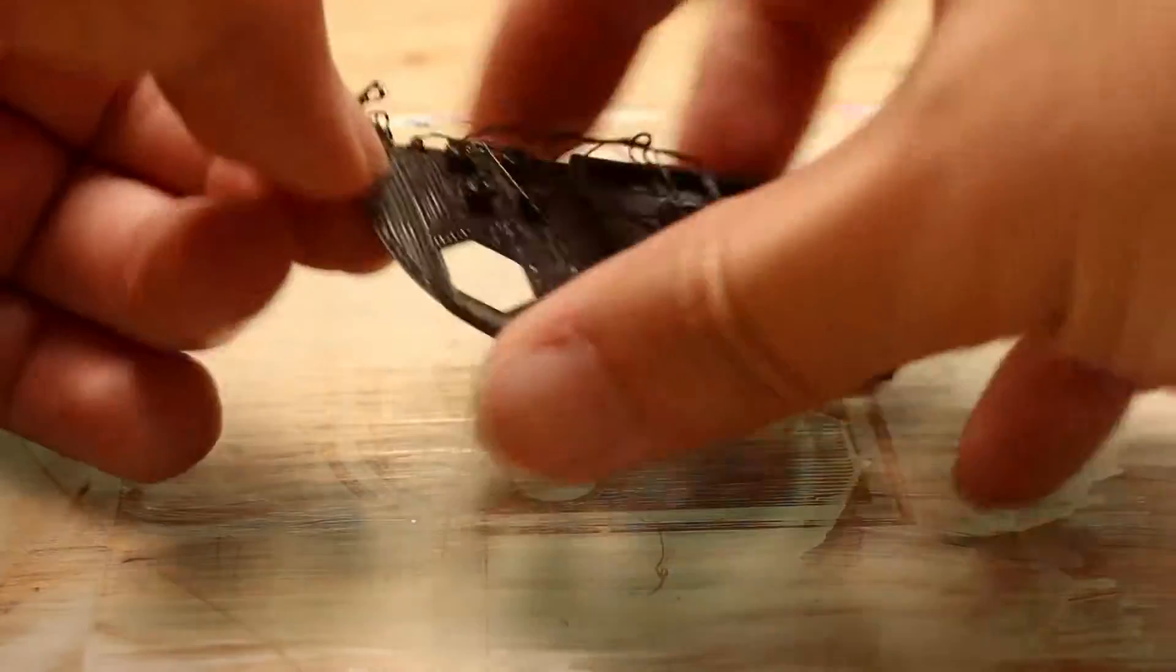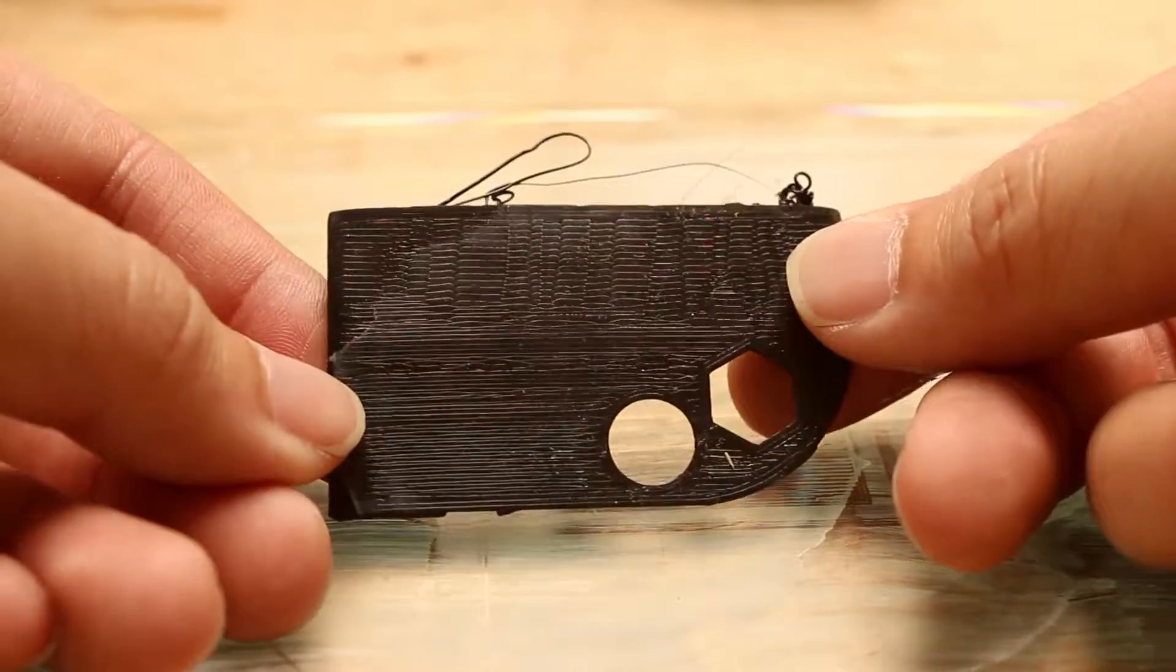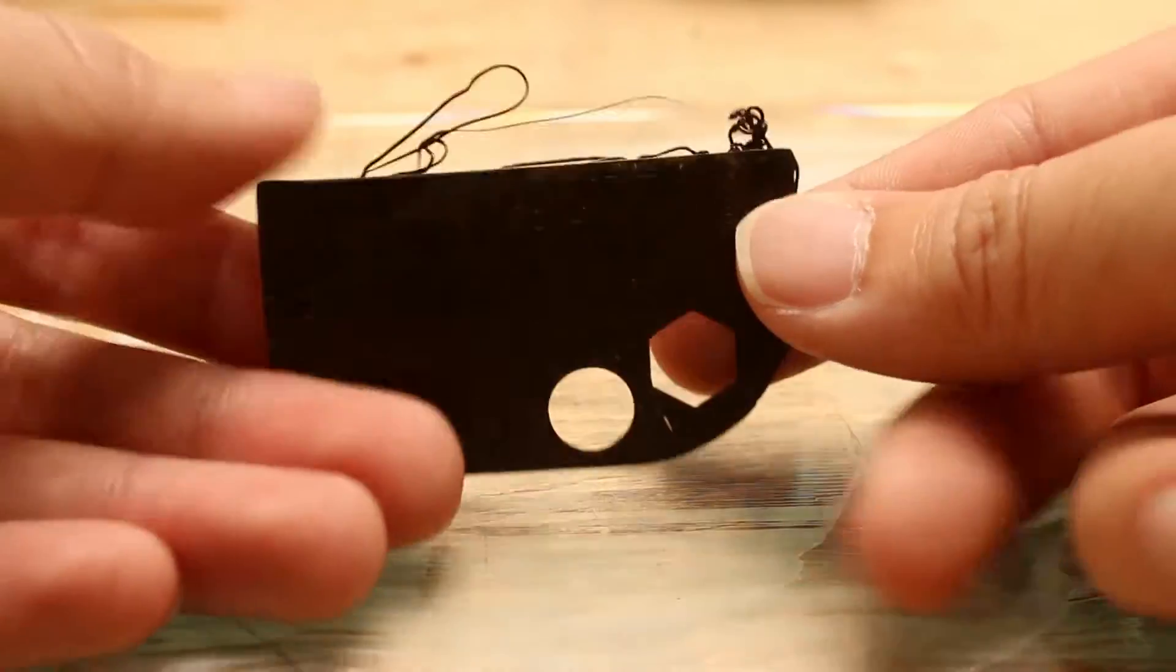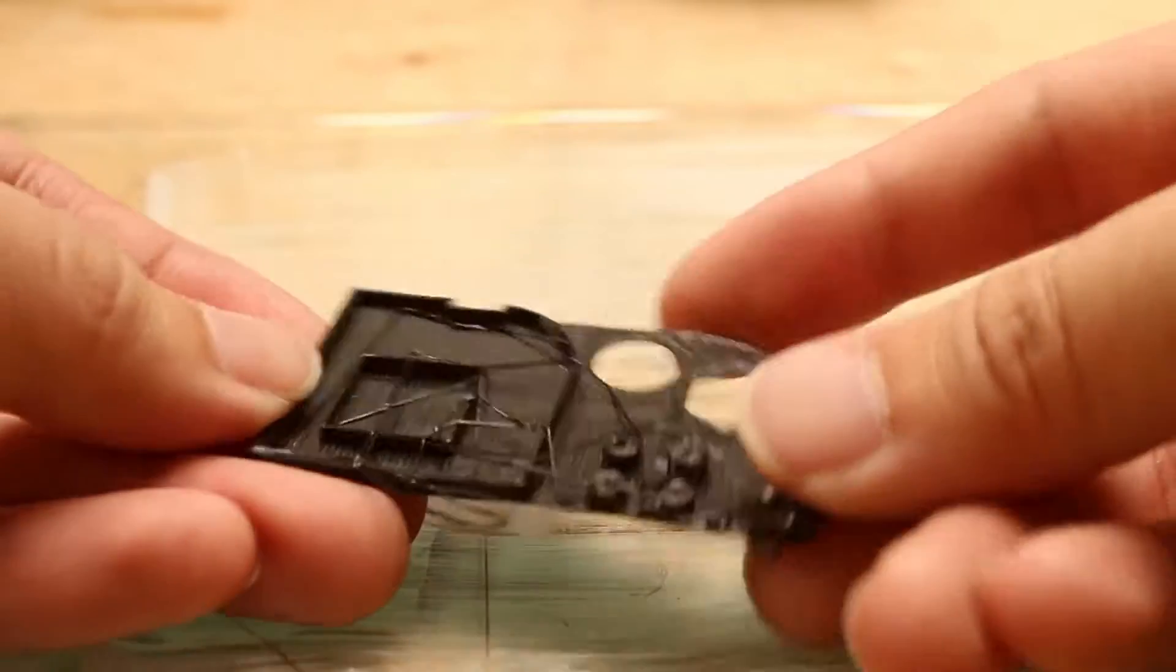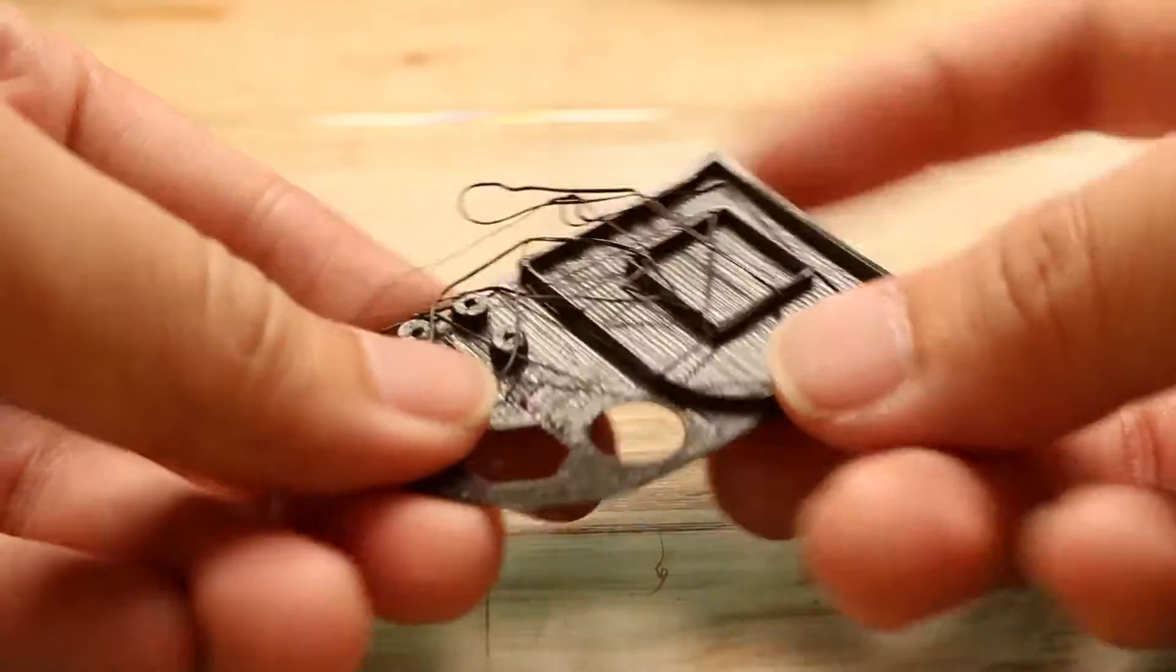Well there we have it. We tried to make PLA sludge today, but it actually doesn't work like ABS. Now we know PLA does not dissolve in acetone and you can't make PLA sludge out of it.